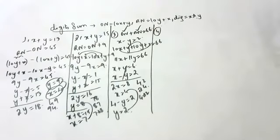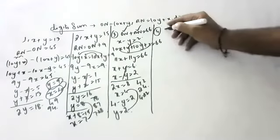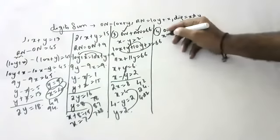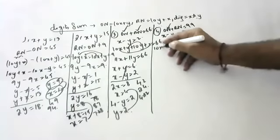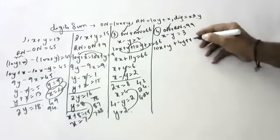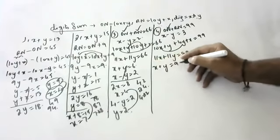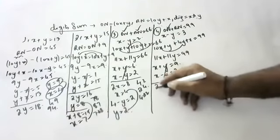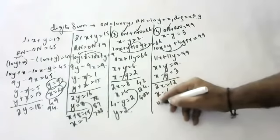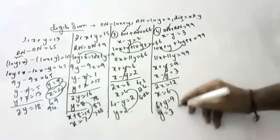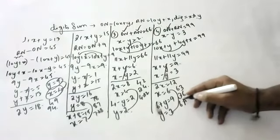One more question: the sum of a 2-digit number and its reversive number is 99. So 10X plus Y plus 10Y plus X is equal to 99. This gives 11X plus 11Y equal to 99, so X plus Y is equal to 9. Also X minus Y is equal to 3. Solving: 2X is equal to 12, X is equal to 6, Y is equal to 3. Wait — correcting: Y is equal to 6, original number is 63, reversive number is 36, digits are 3 and 6.